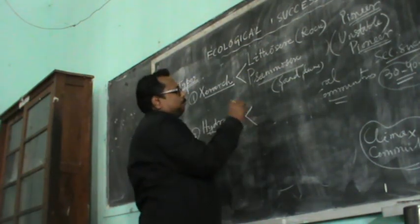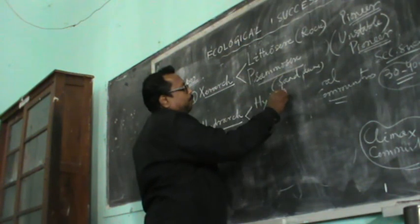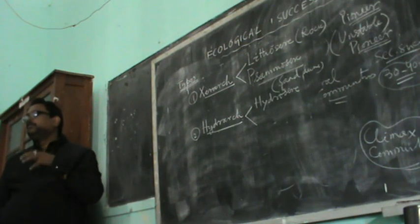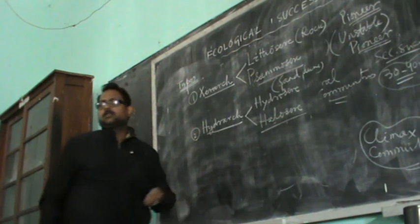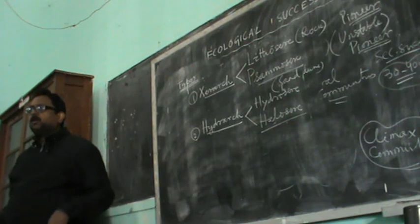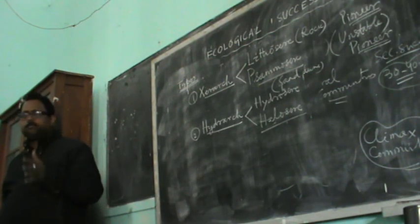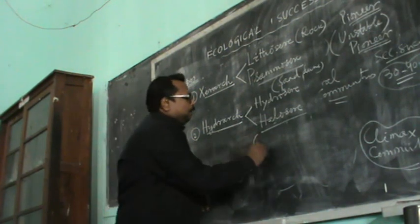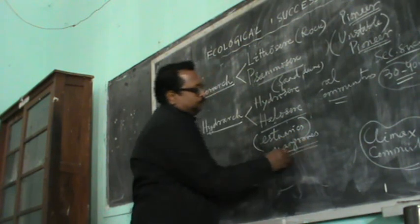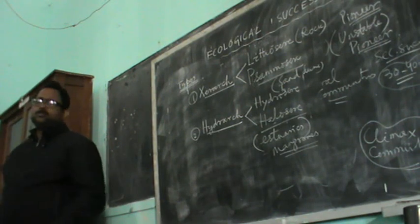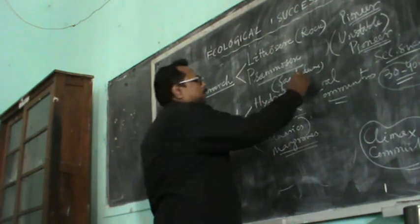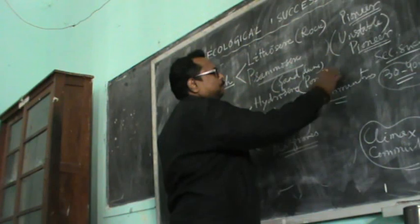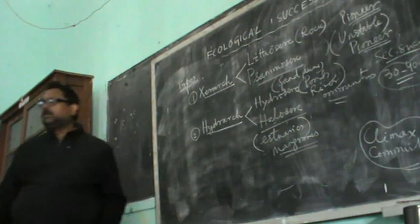Hydrarch is also of two types. One is hydrosere, which starts on a fresh water medium — that is hydrosere. Another succession which occurs on a saline water medium — that is halosere. Halophyte plants grow on saline water, mostly in estuaries, and the vegetation consists mostly of mangroves — shrub-like mangroves to tree varieties. Fresh water habitats, mostly ponds, rivers, and river basins — that is hydrosere.